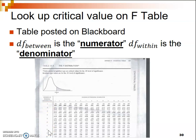We calculated the degrees of freedom within in the last part of step 2. The degrees of freedom within is big N — the total number of people in our study, which was 12 — minus our K, which was 3, giving us a degrees of freedom within of 9. So we'll use row 9 and column 2.